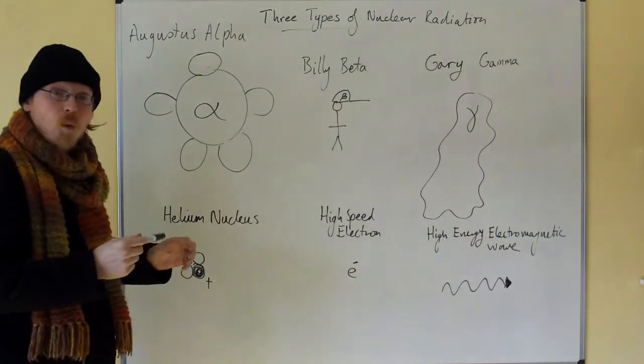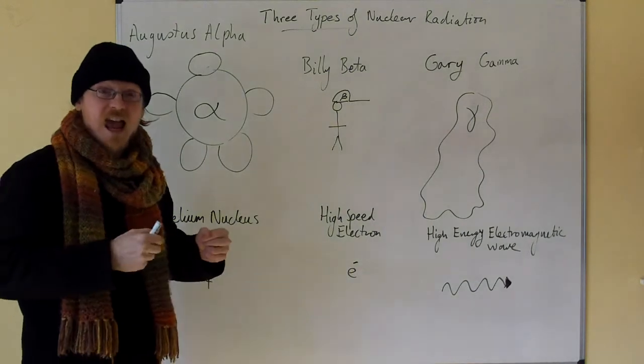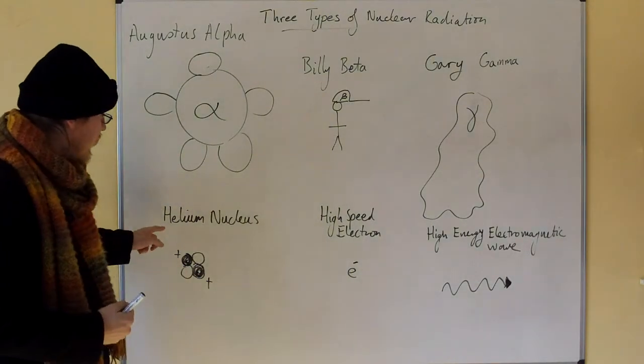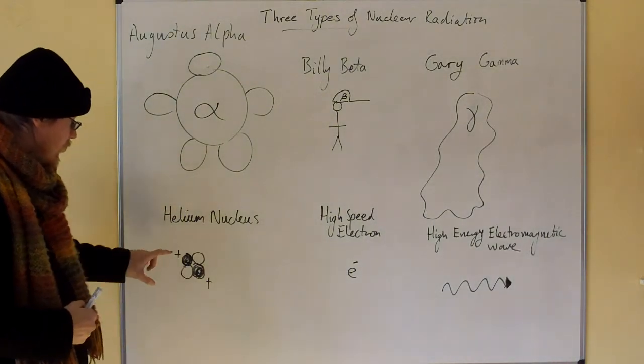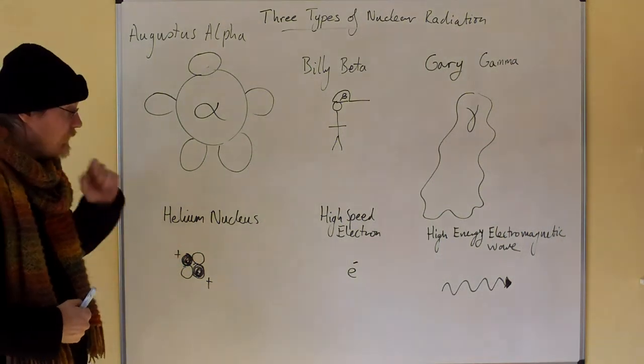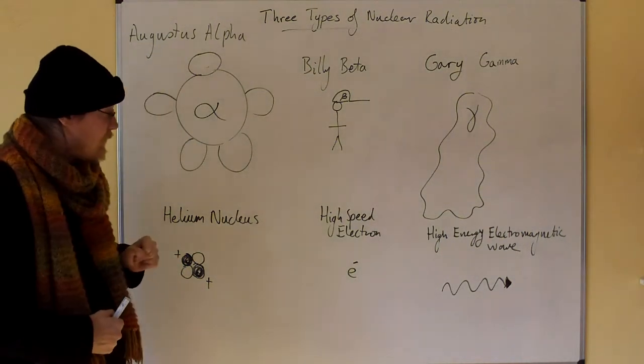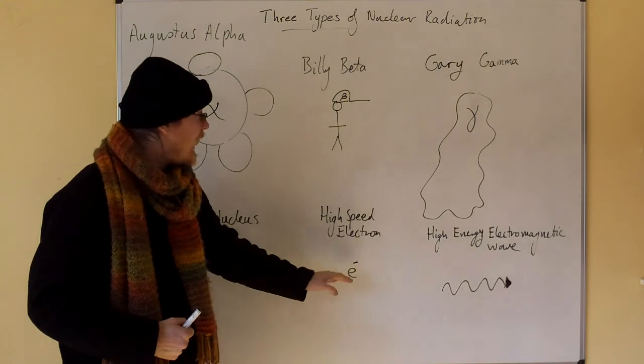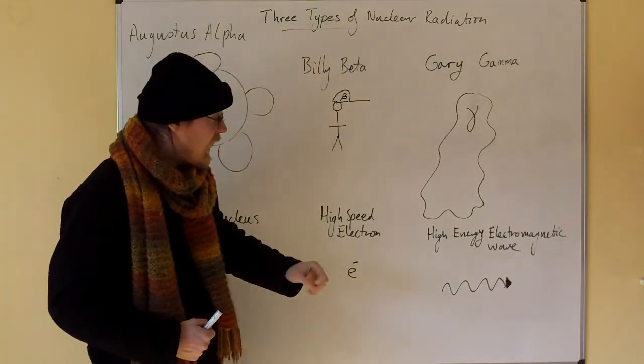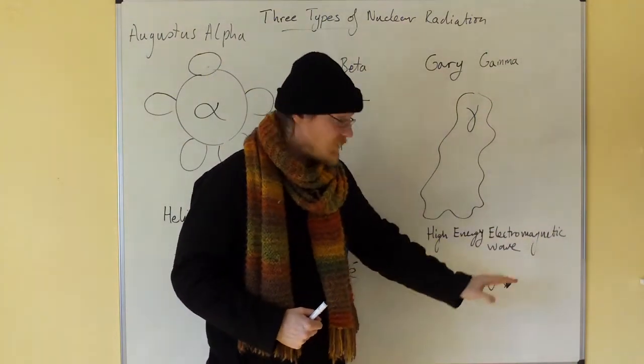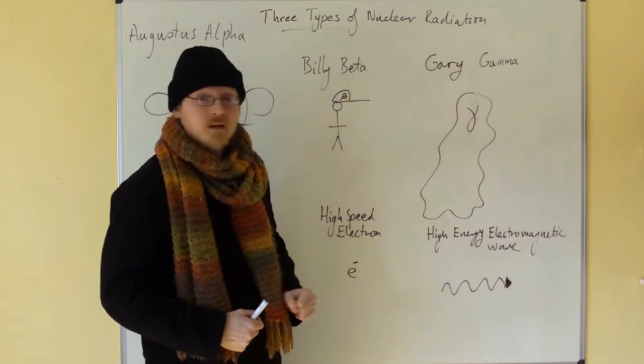Now what the nuclear radiation actually are is a helium nucleus, which is two protons and two neutrons. That's an alpha particle. A high-speed electron, which is a beta particle, and a high-energy electromagnetic wave, which is a gamma ray.